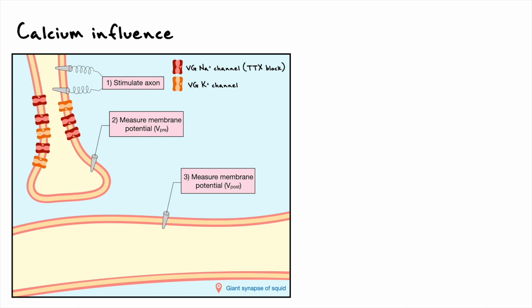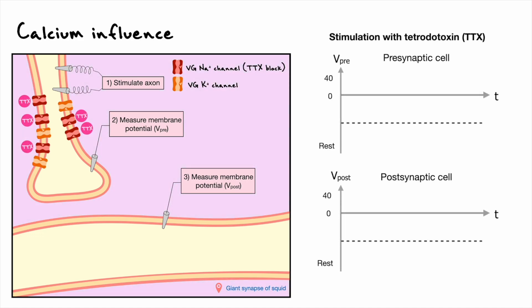To see which ions are responsible for signal transmission, the experimenters first used TTX to block sodium channels. And by injecting current in the pre-synaptic cell, the experimenters still saw an EPSP in the post-synaptic cell. They thus concluded that sodium is not necessary for signal transmission.